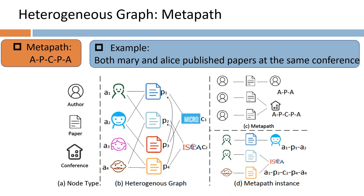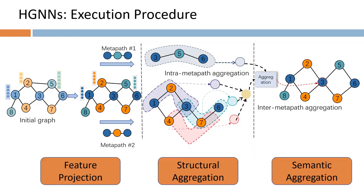This can be primarily divided into four stages. The first stage is metapath instance matching, where all instances that match the defined metapath are found. The other three stages are feature projection, structural aggregation, and semantic aggregation.